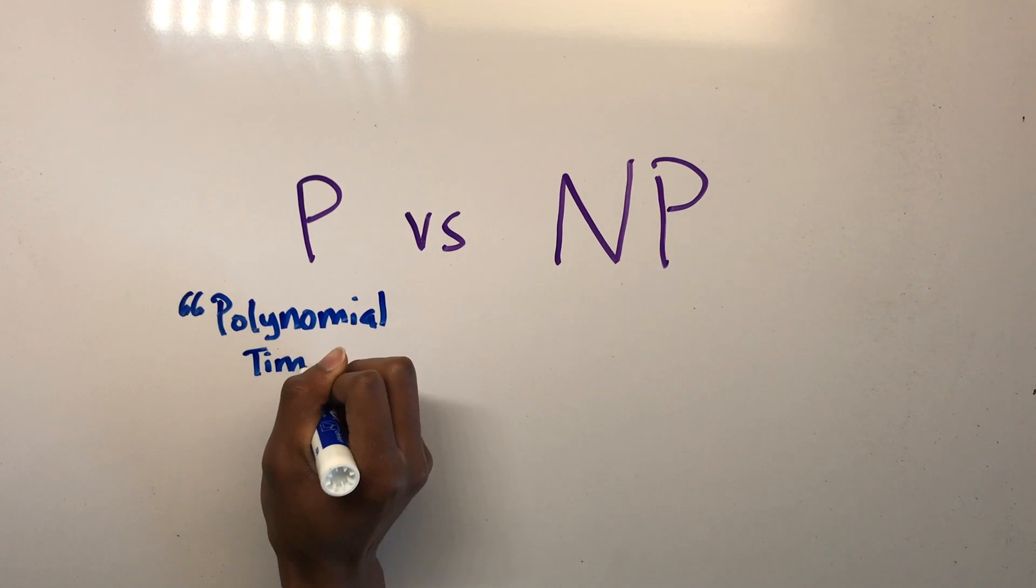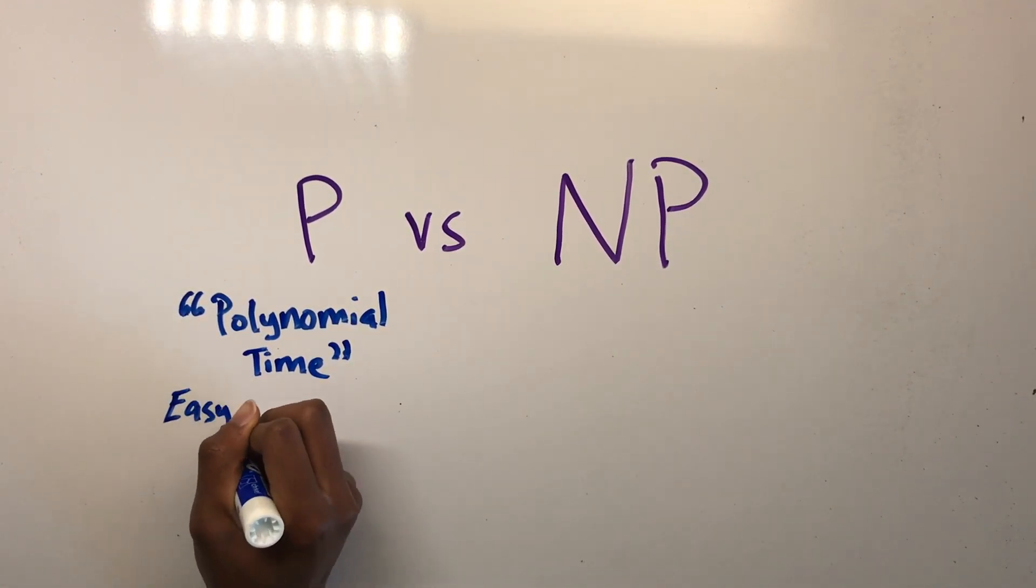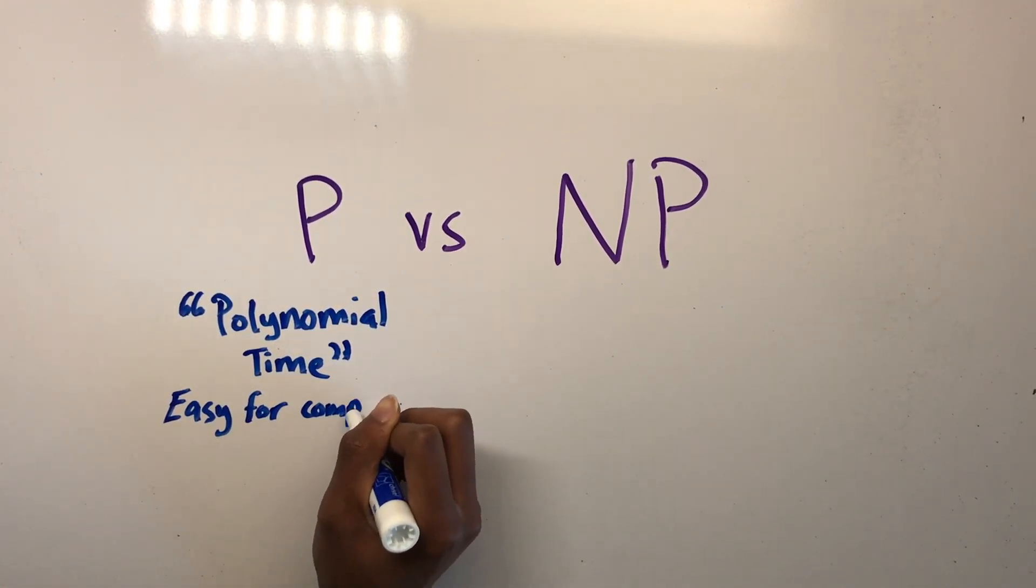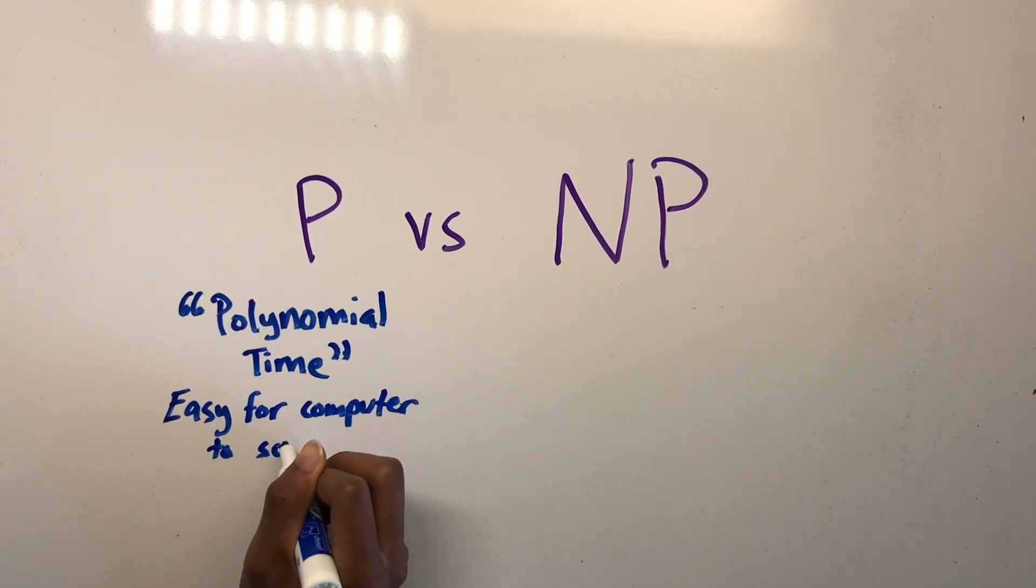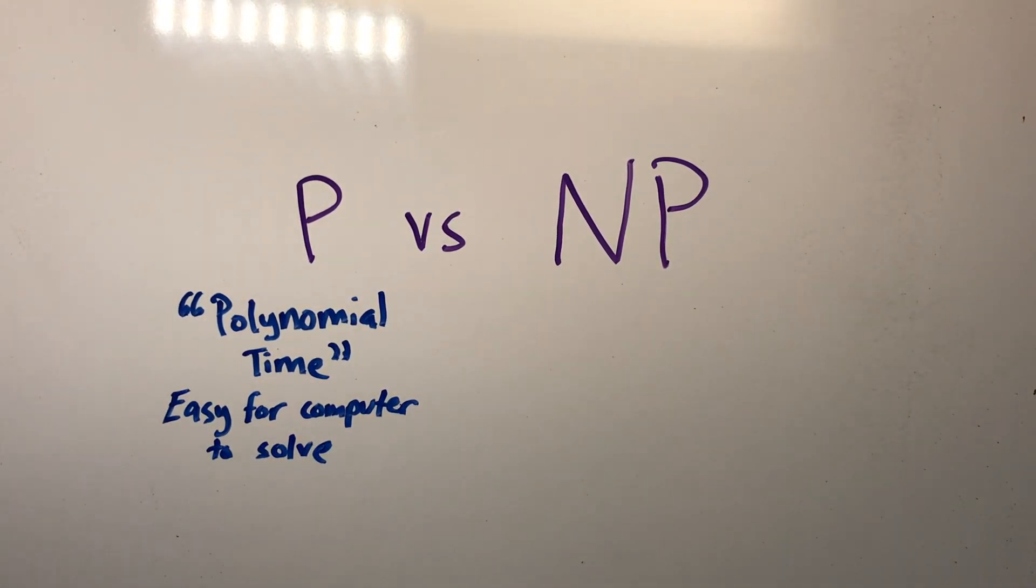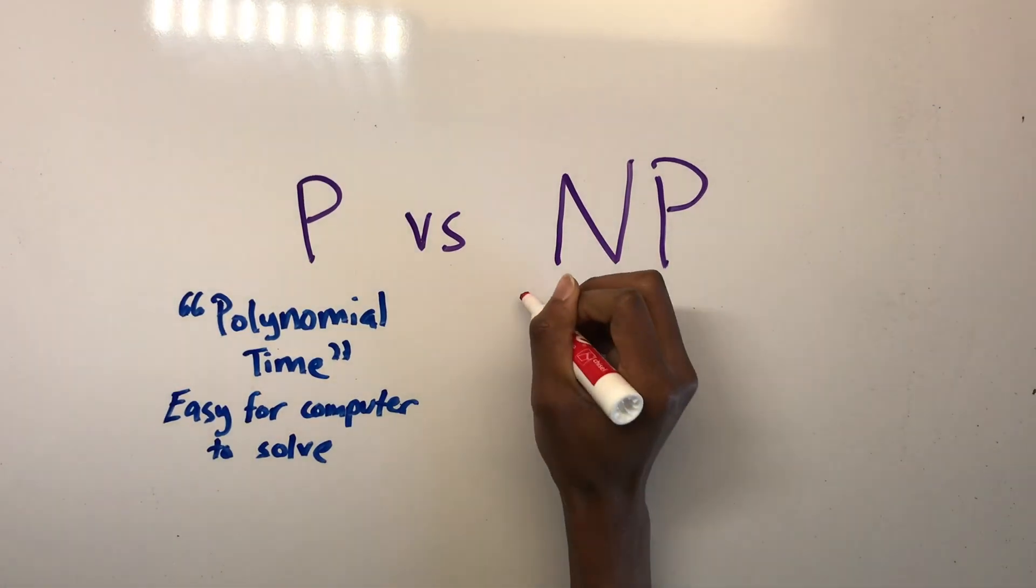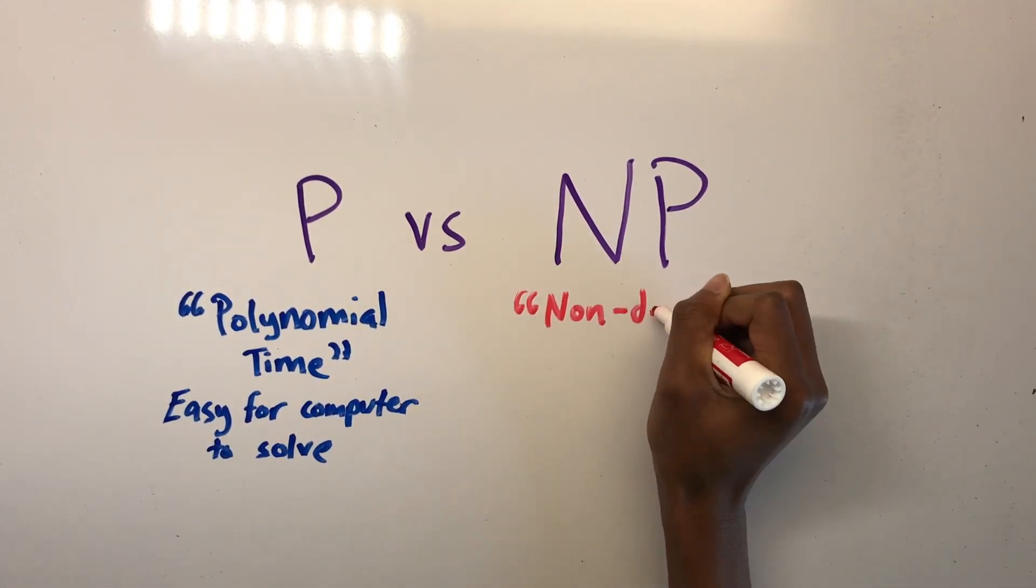It is a question of interest to people working with computers and in mathematics. Basically, it is a question that asks, can an NP problem whose answer can be checked quickly by a computer also be quickly solved by a computer?